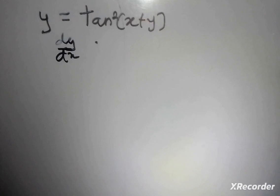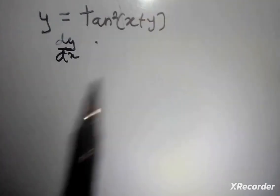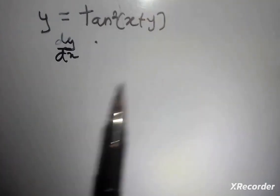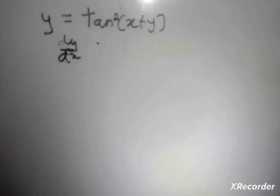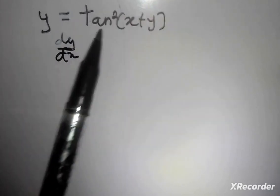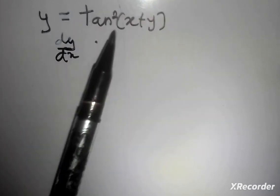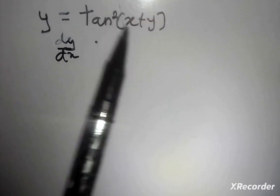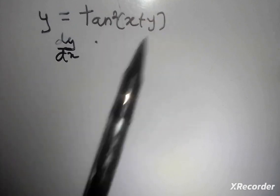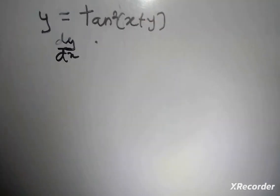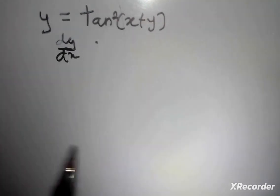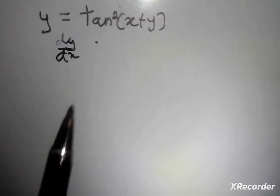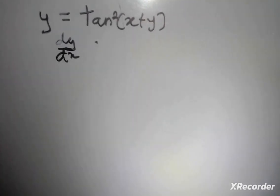If you analyze this function very well, you realize that it's a composite function — a function within a function. I have a trigonometric function here, and within the argument I have a linear function. So in order to differentiate it, I'm going to use the chain rule.